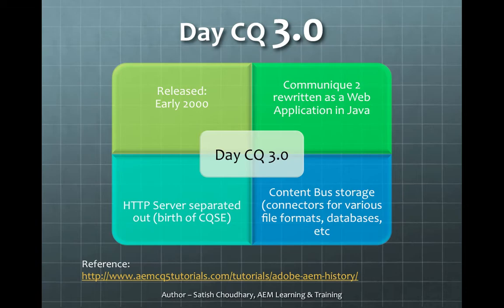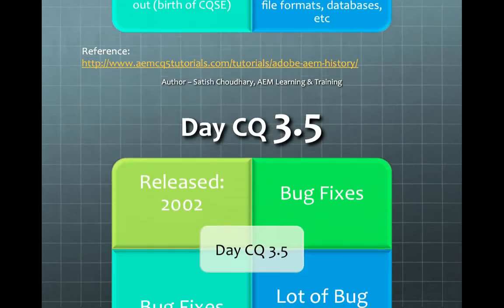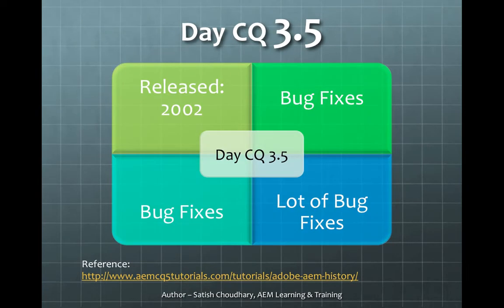DCQ 3.0 was released in 2000 and this is where it was rewritten as a Java web application. Previously it was CGI and then C; now Java came into the picture. With this, the HTTP server was separated out and they had CQSE. It also had content storage for connecting to various file formats and databases. CQ 3.5 was about bug fixes and making CQ 3.0 more stable.